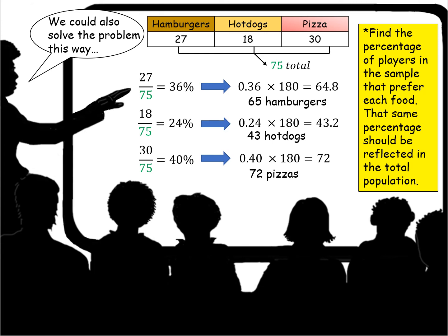Do the same thing with hot dogs: 18 out of 75 preferred hot dogs, that was 24% of that sample population. So I multiply the percent times 180 and I get 43 hot dogs. Same thing for pizza: 30 out of 75 preferred pizza in our sample. So that's 40%. 40% of our total population, 180, is 72. 72 pizzas.